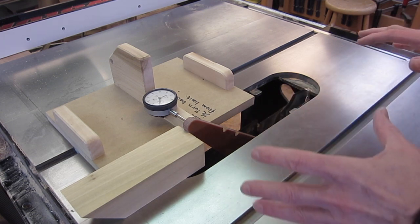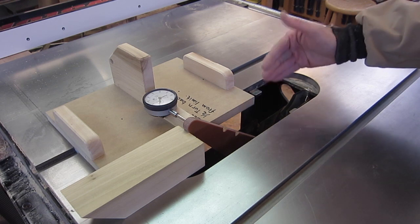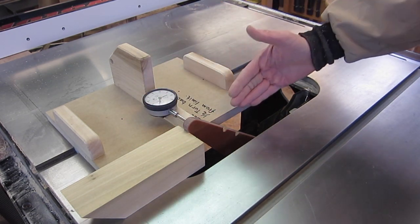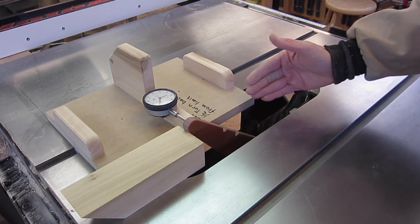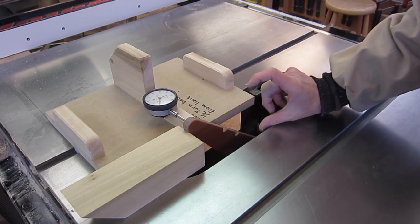Even if your saw does not have separate adjustments for that, it's worth doing the measurement because you want to know maybe you got your blade aligned at maximum height, but it's not aligned at minimum height. And so then you might want to split the difference and have it aligned at halfway height.